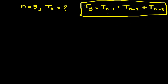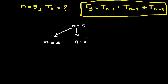So now we have a recursive tree. We have n equal to 5, so we have 3 children. The first root node is n equal to 5. From n equal to 5, we add n equal to 4, n equal to 3, and n equal to 2. So tf5 is equal to tf4 plus tf3 plus tf2.